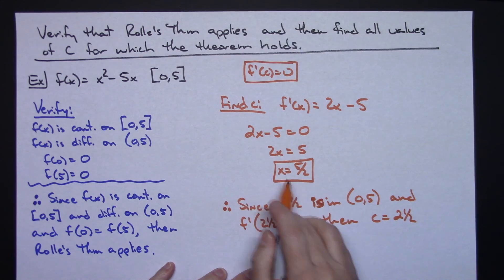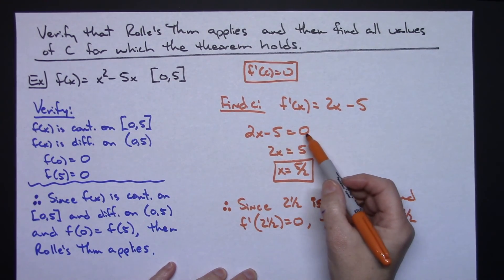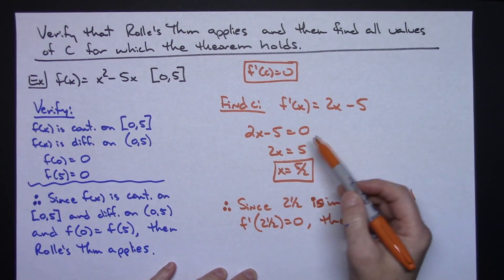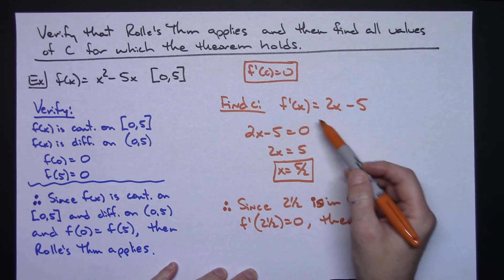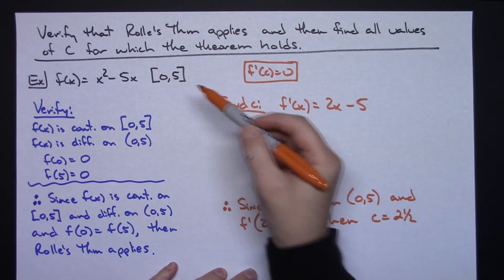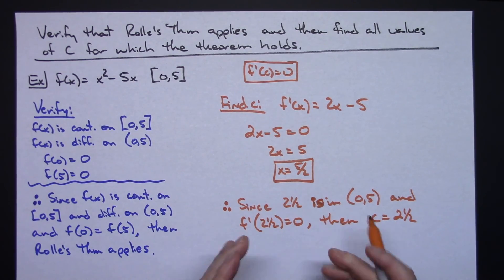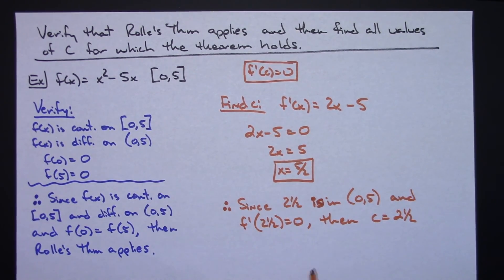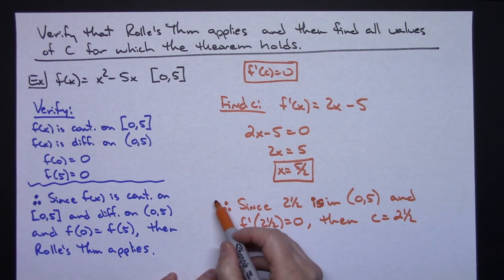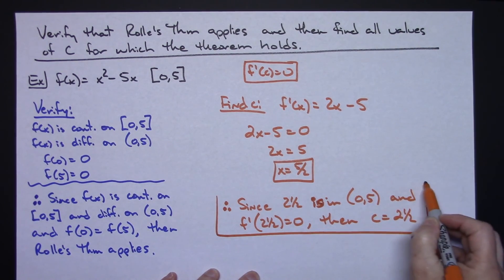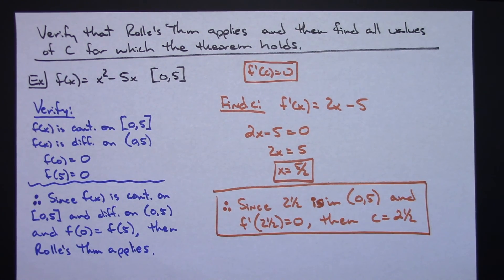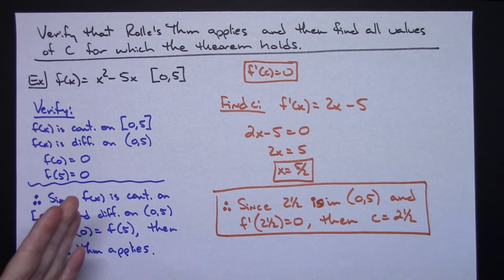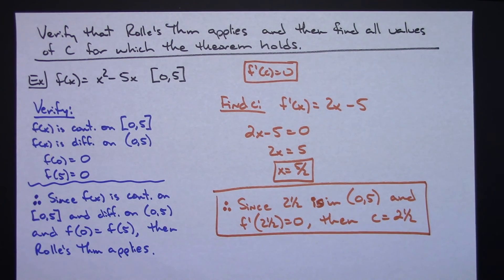The theorem holds, but you always want to check that the value is in the interval — especially if you get two values where the derivative equals 0 and one is in the interval and one is not. The theorem only guarantees the one that is in the interval. So just a quick look at Rolle's Theorem: what it means graphically, and then a problem where you apply it algebraically to find the values of C where the derivative equals 0.